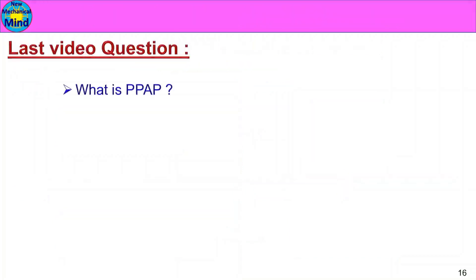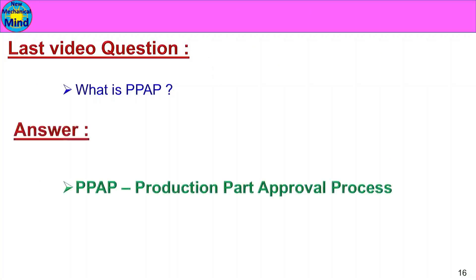Now we will go to the question segment. From the previous video, the question was: What is PPAP? The answer is Production Part Approval Process — if you have a product in sample production and you want to convert to mass production, you conduct the Production Part Approval Process with the customer and get PPAP approval before starting mass production.